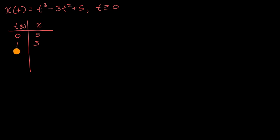And then at time two, we are going to be at 8 minus 12 plus 5, so we're going to be at position 1. And then at time t equals three, it's gonna be 27 minus 27 plus 5, we're gonna be back at 5. So this can help us understand what's going on for the first three seconds.